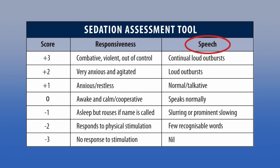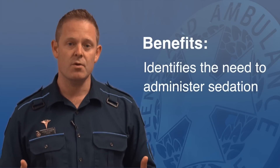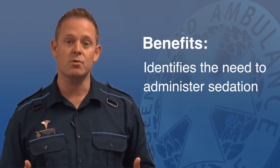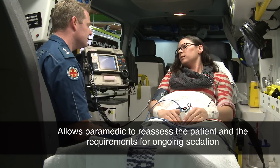A patient with a score of minus three would be someone who is unresponsive to stimulation. A patient with a score of positive three would be agitated, aggressive, with regular loud outbursts. The benefit of the STAT score is not only does it identify the need to administer sedation, but also allows the paramedic to reassess the patient and the requirements for ongoing sedation.